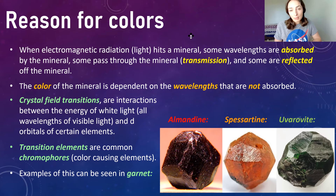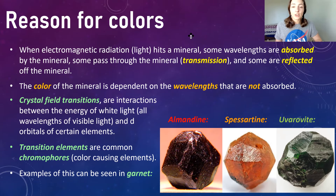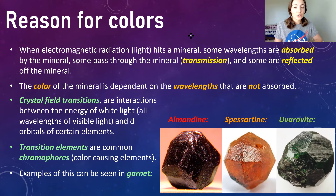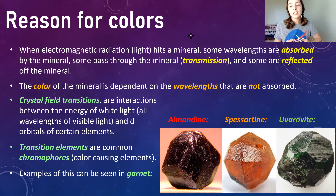For example, there are three common varieties of garnet that are very different in color due to different chromophore elements in their crystal structure. Almandine has iron in its structure, which causes it to appear red, whereas spessartine has manganese, which is why it comes off orange, and uvarovite has chromium as its chromophore element, which is why it comes off green.